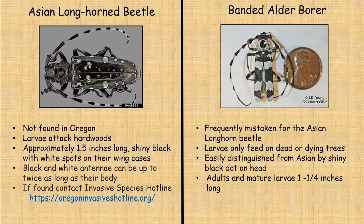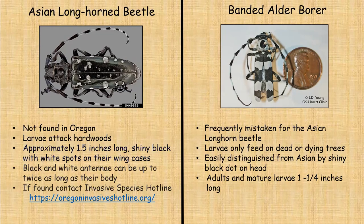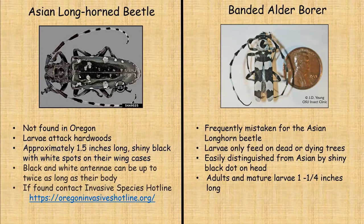The Asian longhorn beetle has black and white antennae that can be up to twice as long as its body — that's why they call them longhorned. If you happen to find one, please contact the invasive species hotline. The banded alder borer's larvae only feed on dead or dying trees, so once again we all want to keep our trees as healthy as can be. It is easily distinguished from the Asian by the shiny black dot on its head, which the Asian does not have. The adults and mature larvae are both about one to one and a quarter inches long.